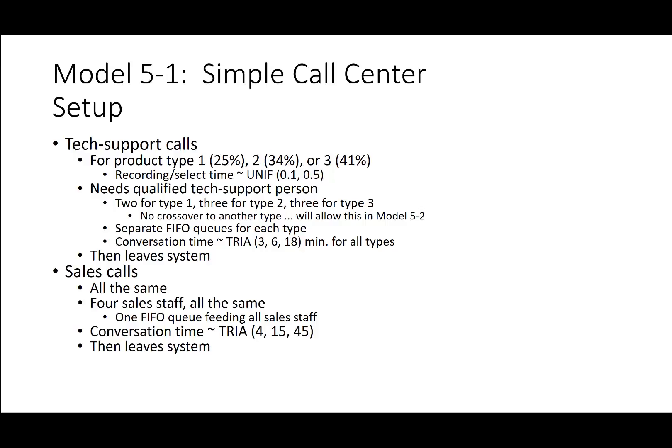For tech support calls, there are product types 1, 2, or 3 with respective percentages, and they need a qualified tech support person. There are two such tech support people for type 1, three for product type 2, and three for product type 3. There is no crossover — a tech support person for type 1 cannot handle product support for type 2. Separate FIFO queues exist for each type, and the conversation time follows a triangular distribution of 3, 6, and 18 minutes for all types.